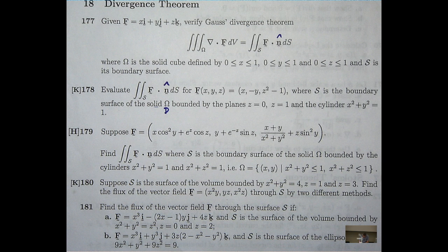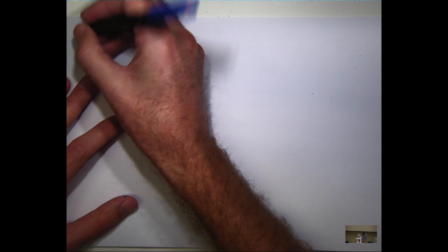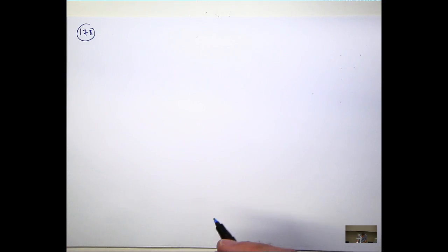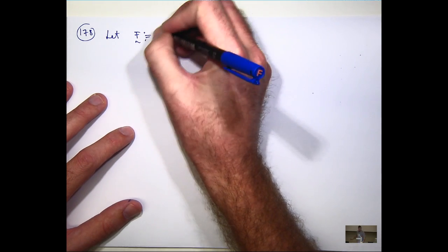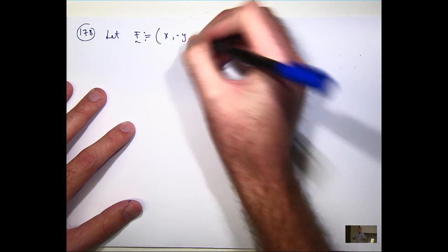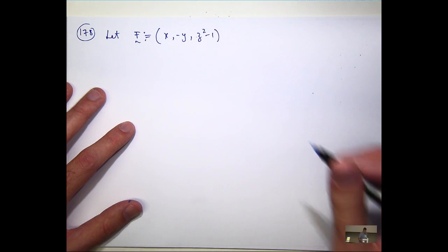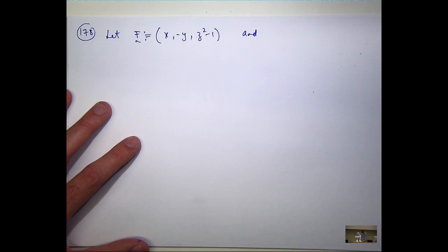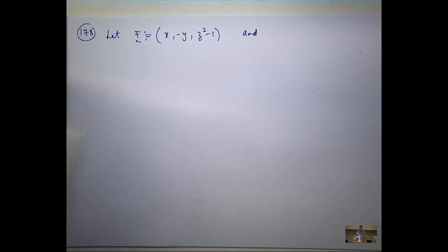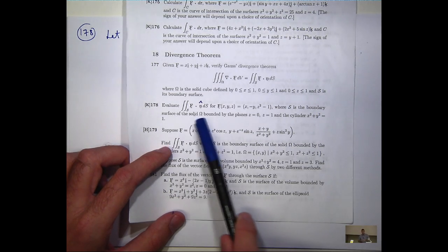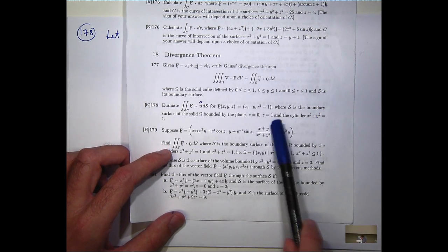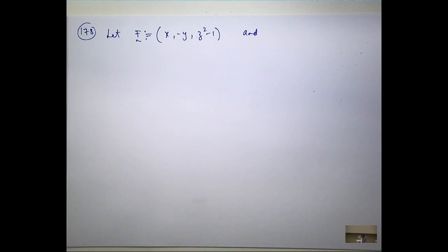So let's draw a picture, and essentially what we're going to do is not evaluate this. We're going to use Gauss's Divergence Theorem and evaluate the triple integral over the solid that's bounded by s. So let's have a go. So this is 178. So we've got a vector field defined in the following way. And we've got some region S. That's the boundary of the surface of this omega bounded by these two planes and this cylinder. So let's draw that in.